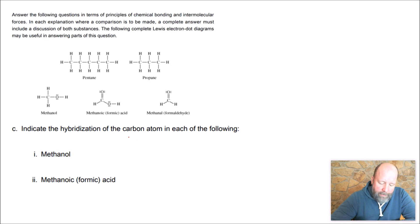So hybridization of the carbon atom in each of the following methanol. There's only one carbon atom right there, and it's got one, two, three, four things stuck to it. And remember, we count them like this. If it's got one thing stuck to it, it's S. If it's got two things stuck to it, it's SP. If it's got three things, it's SP2. And if it's got four things, it's SP3. So that's simple, just counting.